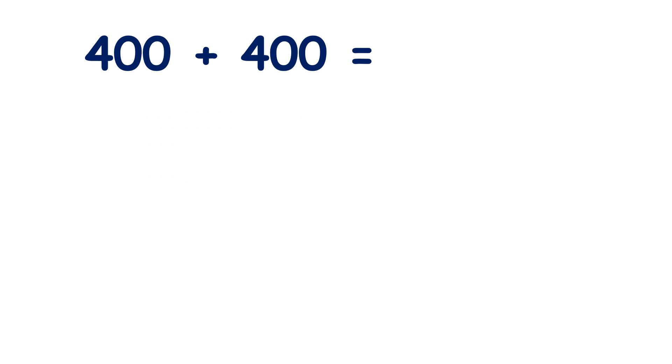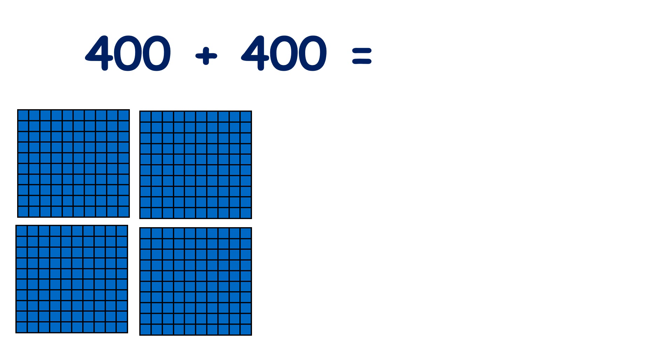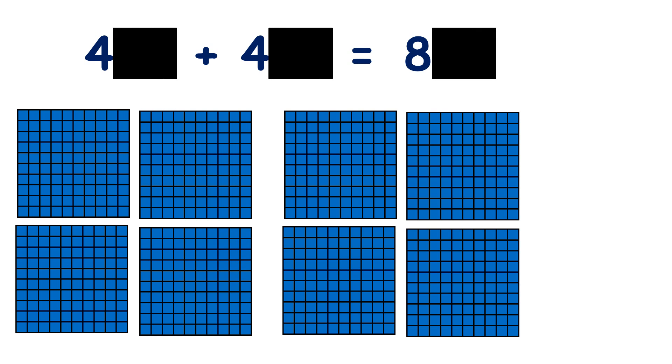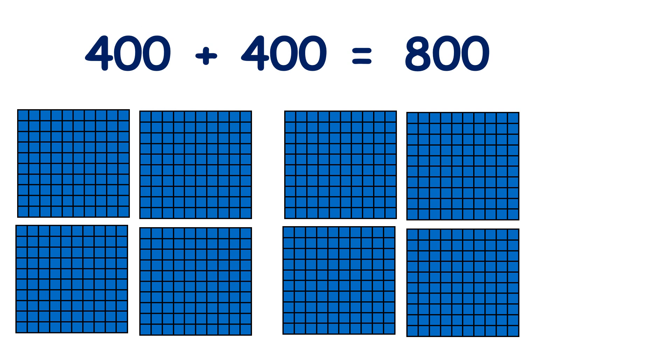So what is 400 plus 400? Well, there are 400s, and there's another 400s, so now we have a total of 800. We know that 4 plus 4 is 8, so we know that 400 plus 400 is 800.